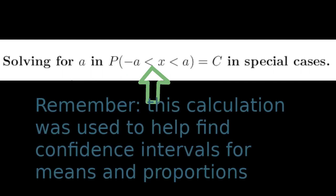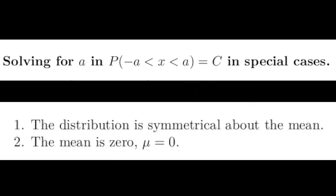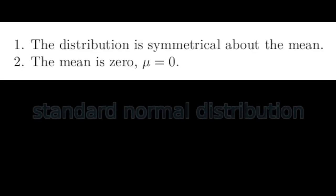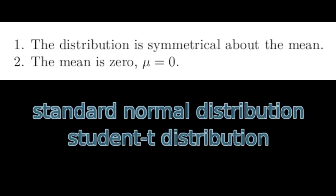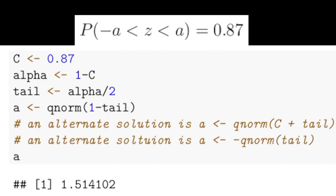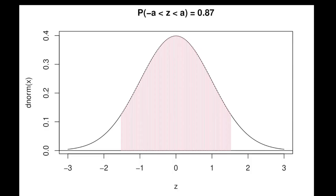However, solving for the boundaries is well defined in special cases: distributions that are symmetrical about the mean where the mean equals zero. For the distributions we've studied, only two satisfy these conditions — the standard normal distribution and the t distribution. In a standard normal distribution, we can find the a's so that the z's between minus a and a are 87% of the area under the curve. The textbook and class discuss the geometry explaining the reasoning behind the script that does this.